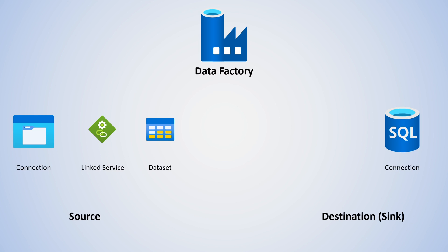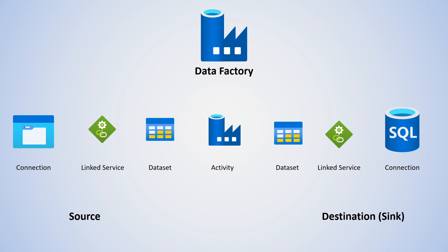The same is true on the destination side — we'll have that linked service and dataset. The connection point here is what's called the activity, and that's really where the magic happens to connect those two datasets and those two connection points together and do whatever activity you want to do. So we know it's moving from source to destination in that manner.